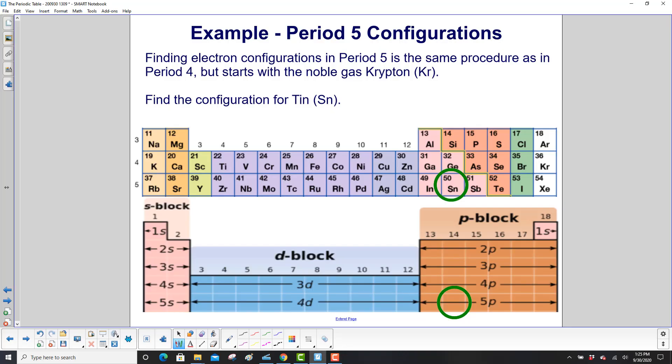Finding electron configurations in period five, it's the same procedure as in period four. But instead of starting with argon, we're going to start with krypton, because krypton is in the period right above your period five elements.